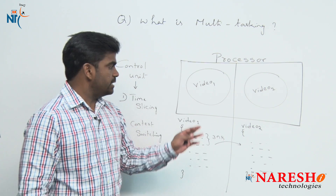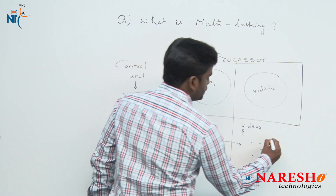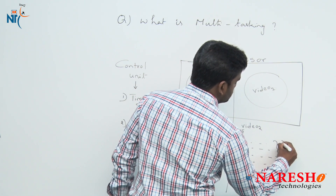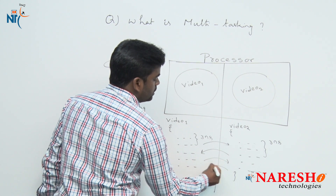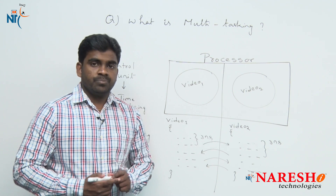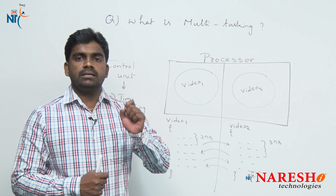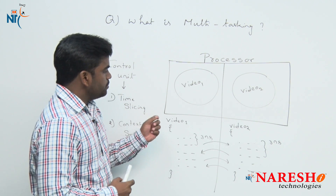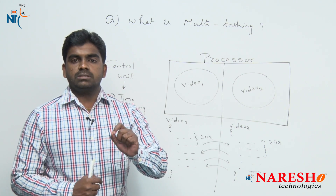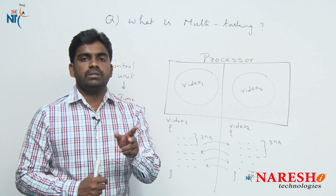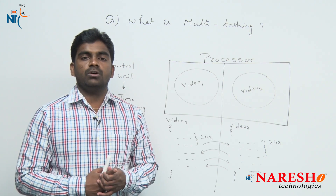Context means a place, and here it is a process space. From one process space to another process space, the control will switch. Suppose after three nanoseconds the time is up — the control switches back. So the control is switching from one location to another location to perform multitasking. We are thinking that both are executing parallelly, but that is impossible. A processor switches between the tasks — that is, between process spaces — to execute the instruction set of different tasks.